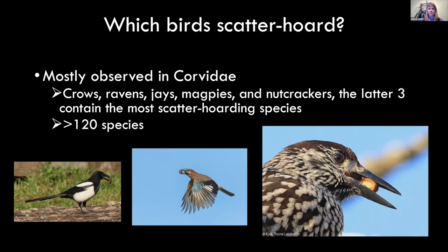Which birds are scatter hoarders? There are a lot of bird species on earth, but very few scatter hoard, and most of those are found in Corvidae — crows, ravens, jays, magpies, and nutcrackers. The most scatter hoarding species are found among jays and nutcrackers, which are the most prolific seed scatter hoarders. There are about 120 species of corvids worldwide and a whole lot of plant species that likely depend on these dispersal agents.